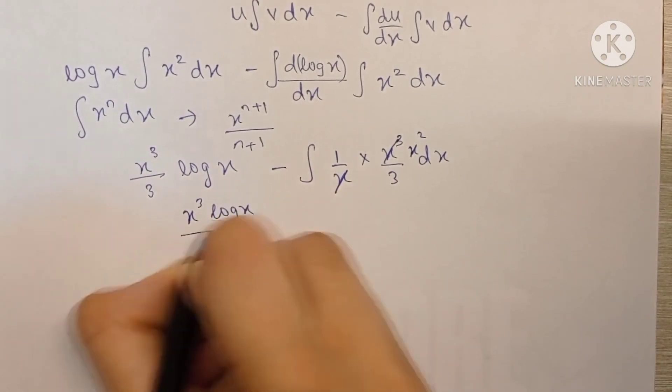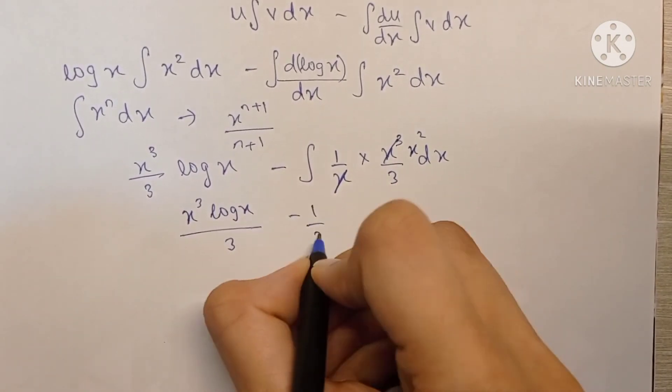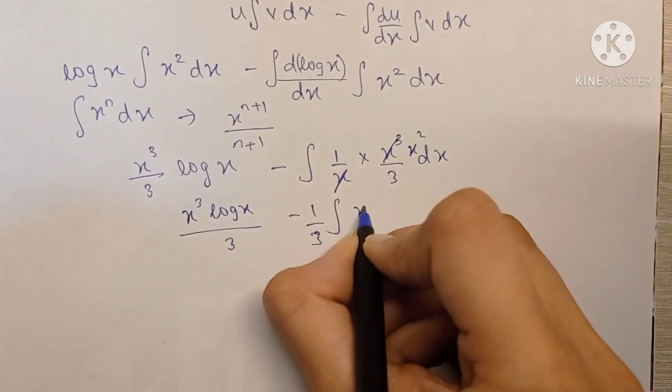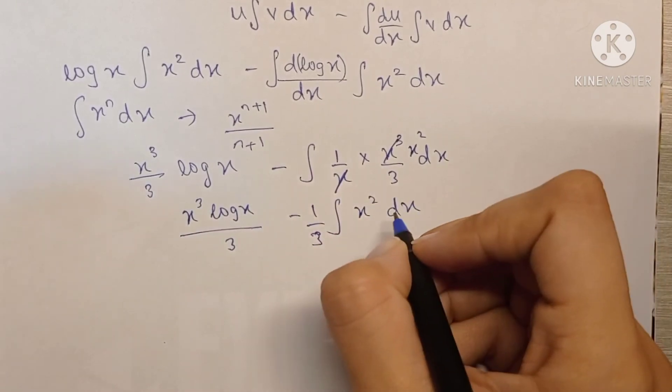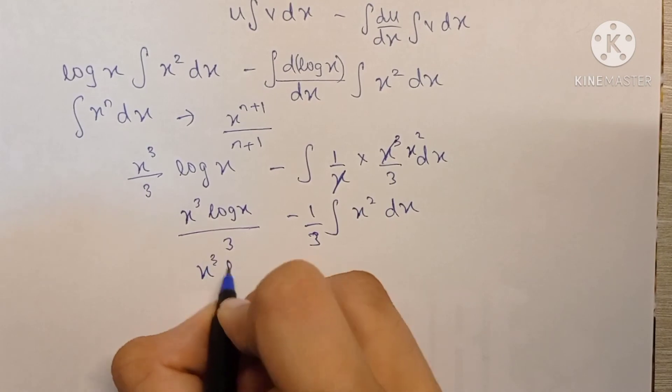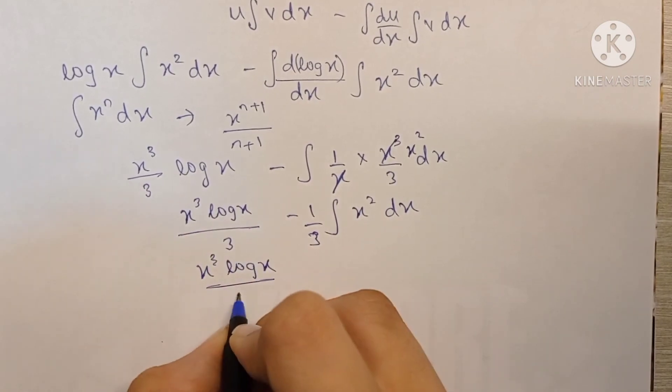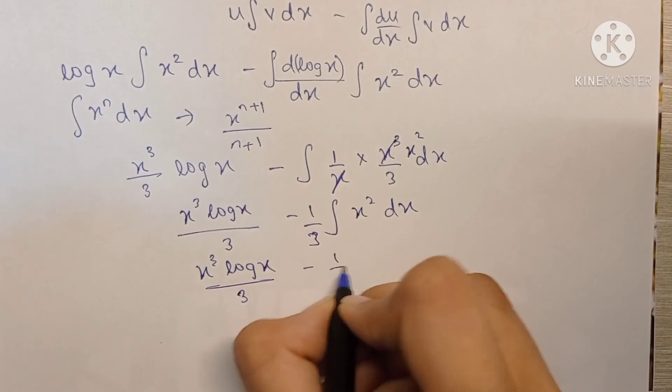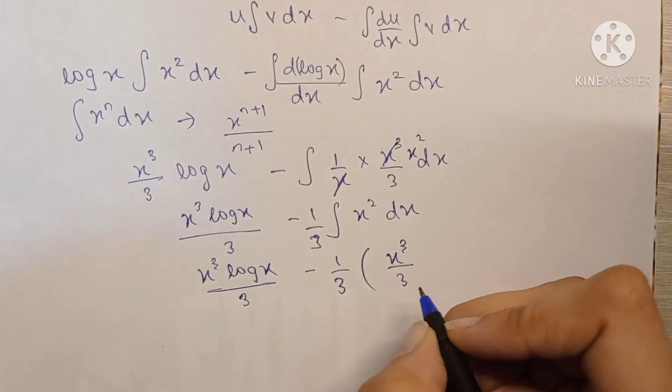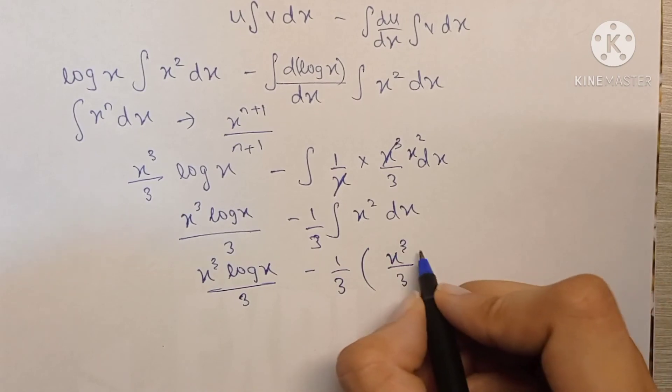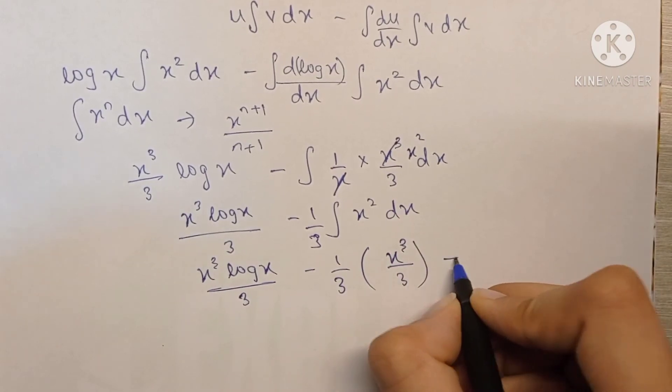So we have x cube log x upon 3 minus 1 by 3 into the integration of x square dx again. So this becomes x cube log x upon 3 minus 1 by 3 into x cube by 3, because we just saw that the integration of x square dx is x cube by 3.